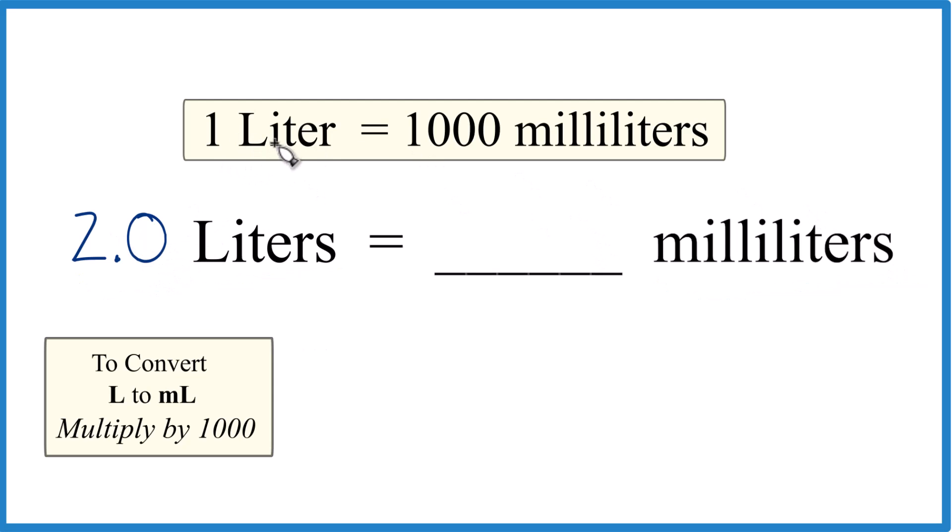You need to know that 1 liter equals 1,000 milliliters. So if 1 liter is 1,000 milliliters, 2.0 or 2 liters is going to be 2,000 milliliters.